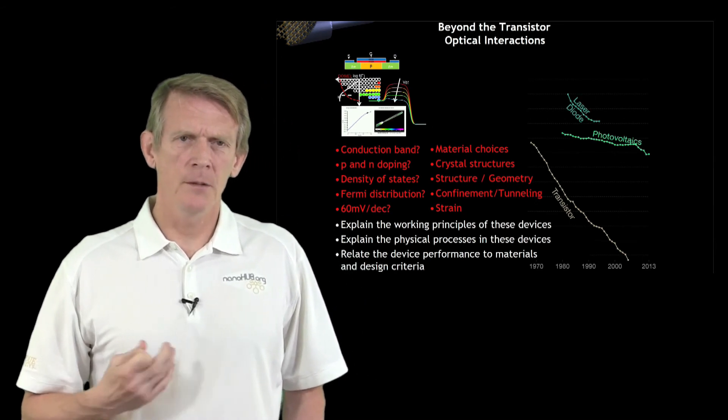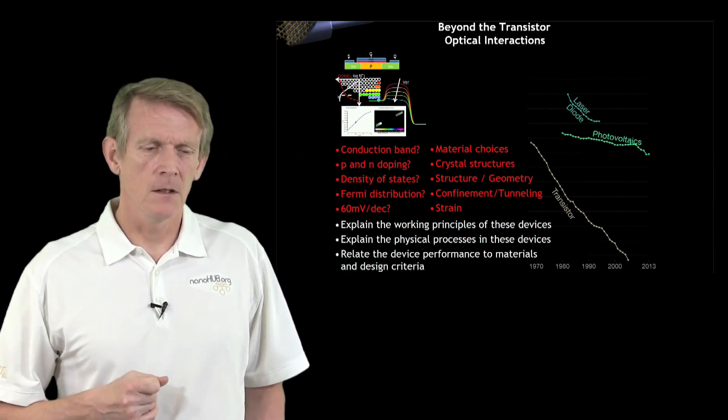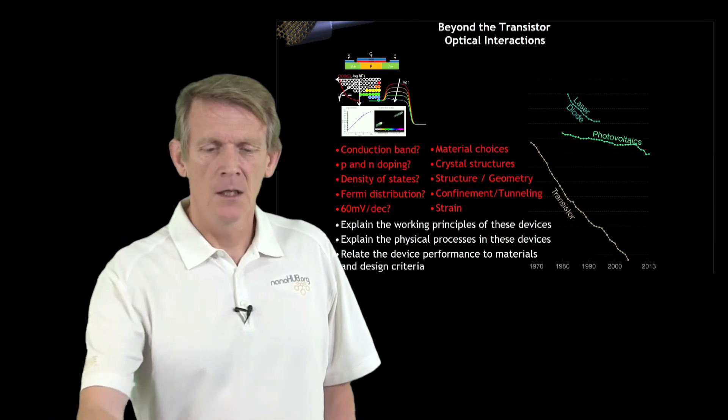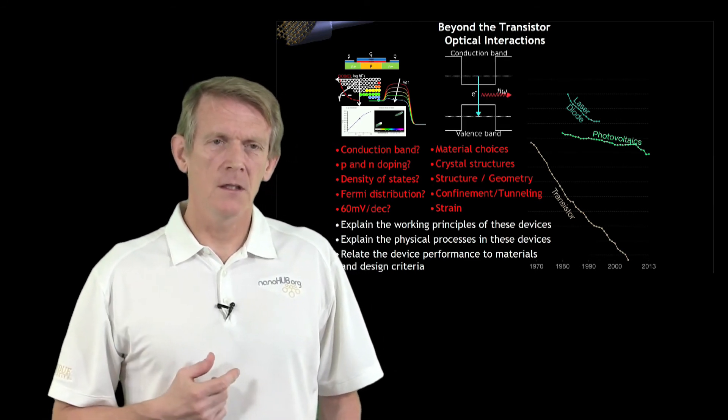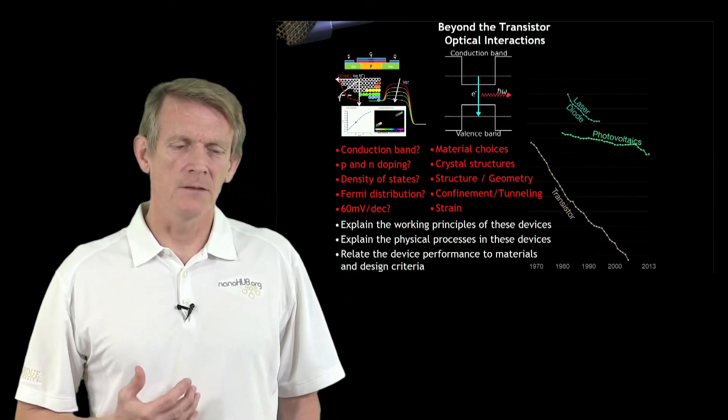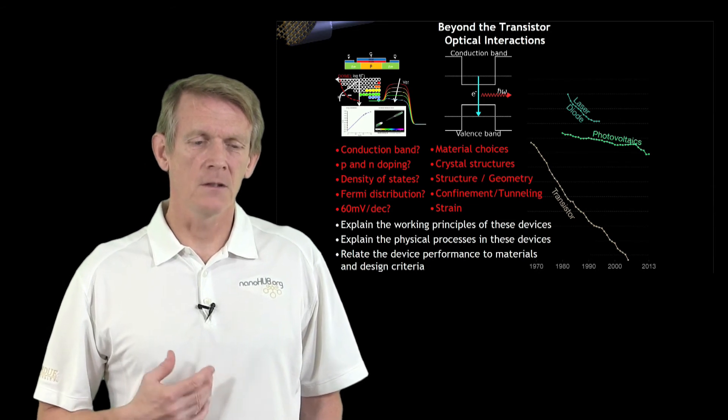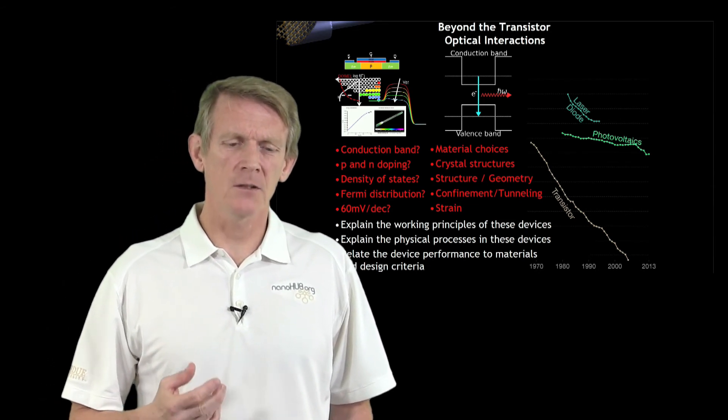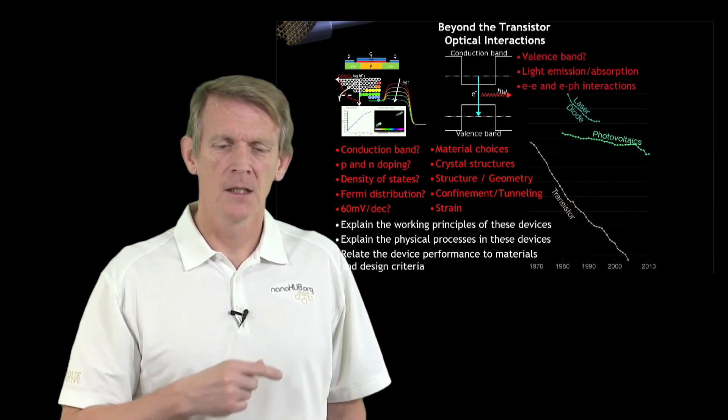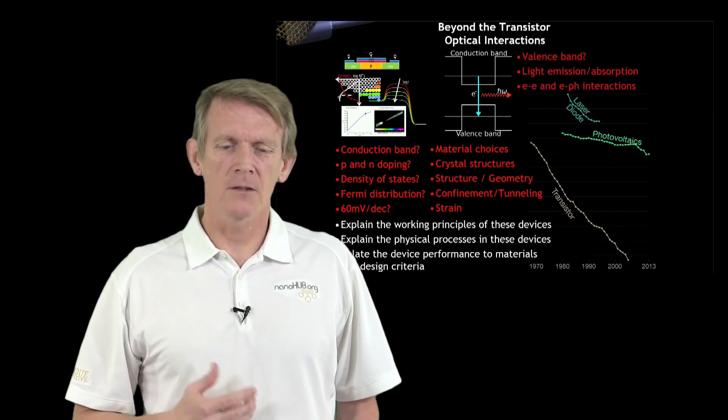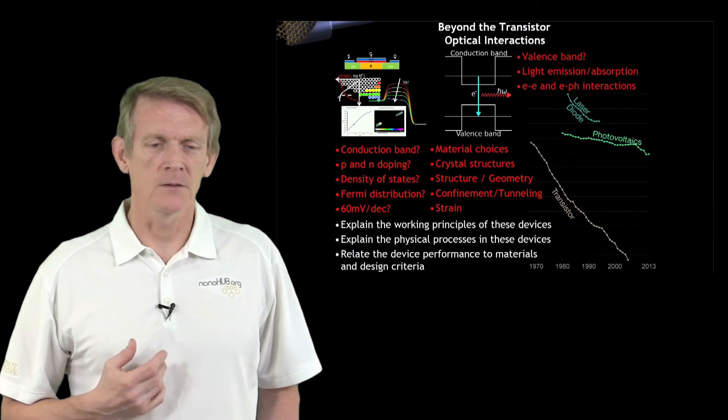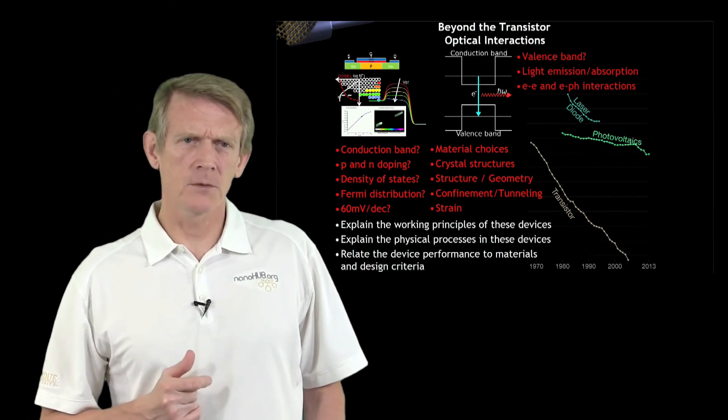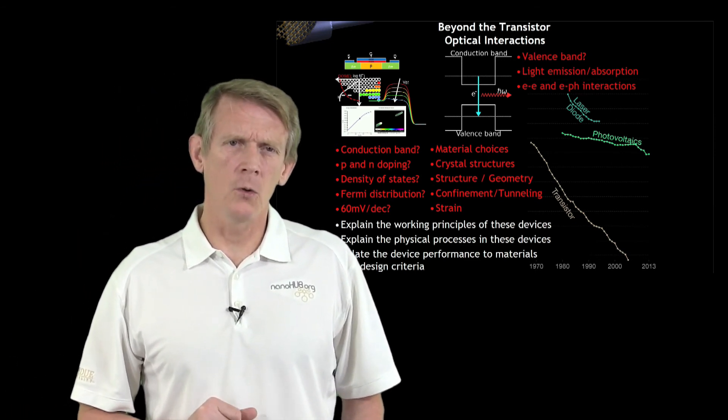Let me talk about optical devices beyond the transistors. Key elements here is that we have optical interactions between electrons and holes and photons. We'll learn about conduction bands and valence bands and electron-electron and electron-phonon interactions.